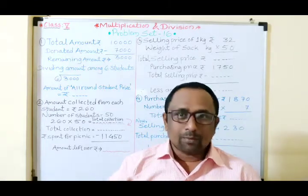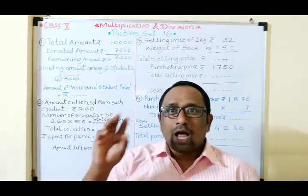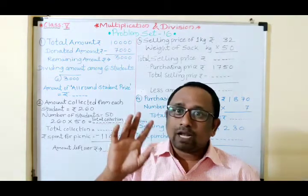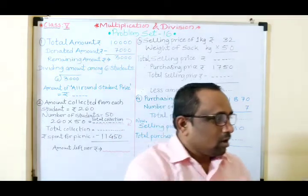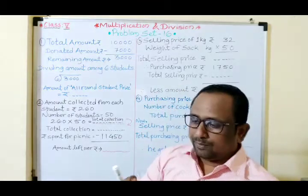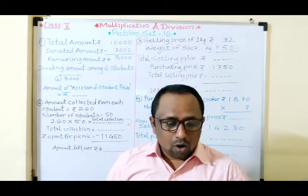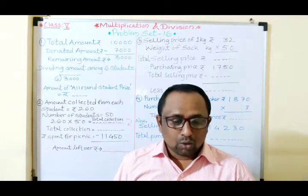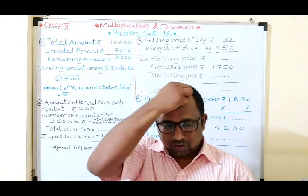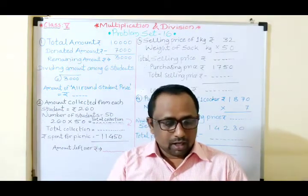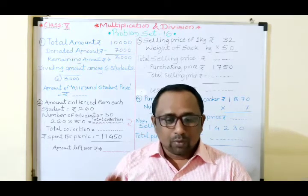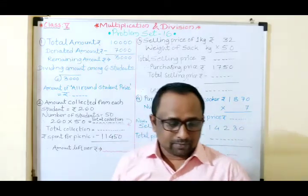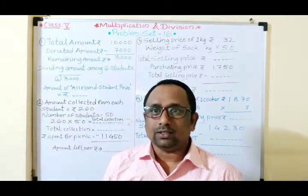There are six examples and we will solve all of them here. I will write only the given things; the calculation you have to do yourself. Now the first example: from a total of 10,000 rupees, Anna donated 7,000 rupees to a school. The remaining amount was to be divided equally among six students as the all-round student prize. What was the amount of each prize?